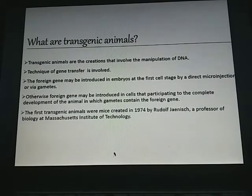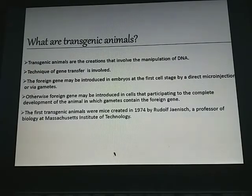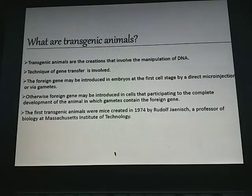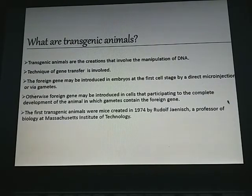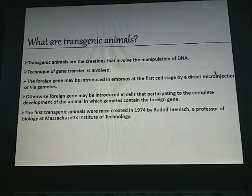Transgenic animals are creations that involve the manipulation of DNA using the technique of gene transfer. A foreign gene may be introduced into the embryo at the first cell stage by direct micro injection or via gametes. The first transgenic animals were mice, created in 1974 by Rudolf Jaenisch, a professor of biology at Massachusetts Institute of Technology.